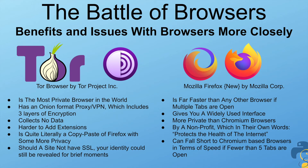Next up, we have Mozilla Firefox — the new one at least. It is far faster than any other browser when multiple tabs are open. It gives you a widely-used interface similar to Chromium, but nonetheless very easy to get support for. It is more private than Chromium-based browsers, and it was developed by a nonprofit which, in their own words, "protects the health of the Internet." The disadvantage is that it can fall short of Chromium-based browsers in terms of speed if fewer than five tabs are open.